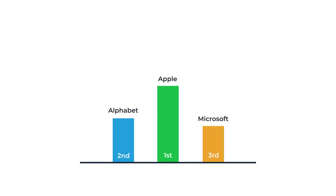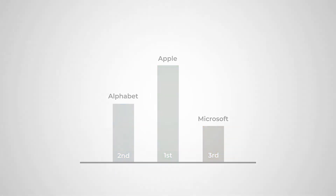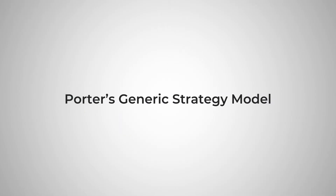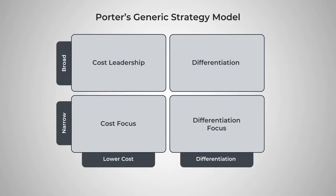However, even in such a strong competitive environment, Apple has been able to maintain its leadership position. The competitive advantage of Apple is based on its differentiation. We can take a look at this using the Porter's generic strategy model. Based on this model, a company can generate competitive advantage through four different ways: cost leadership, cost focus, differentiation, and differentiation focus.